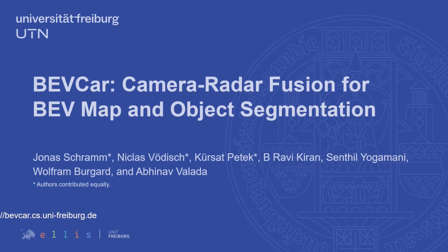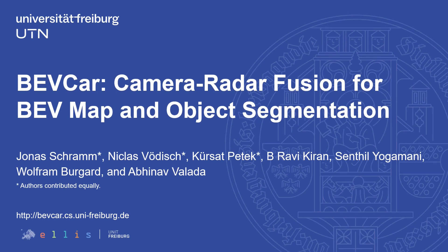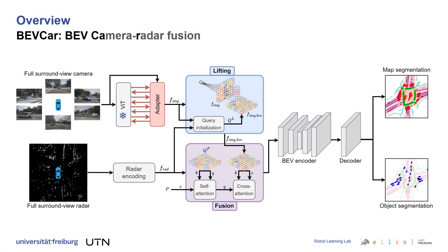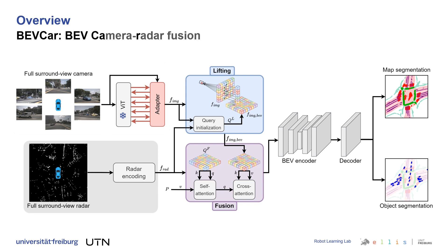We present our novel method BEVCar, addressing camera-radar fusion for BEV map and object segmentation. We obtain descriptive fusion features from a DynoV2 backbone and utilize a learnable radar encoding.